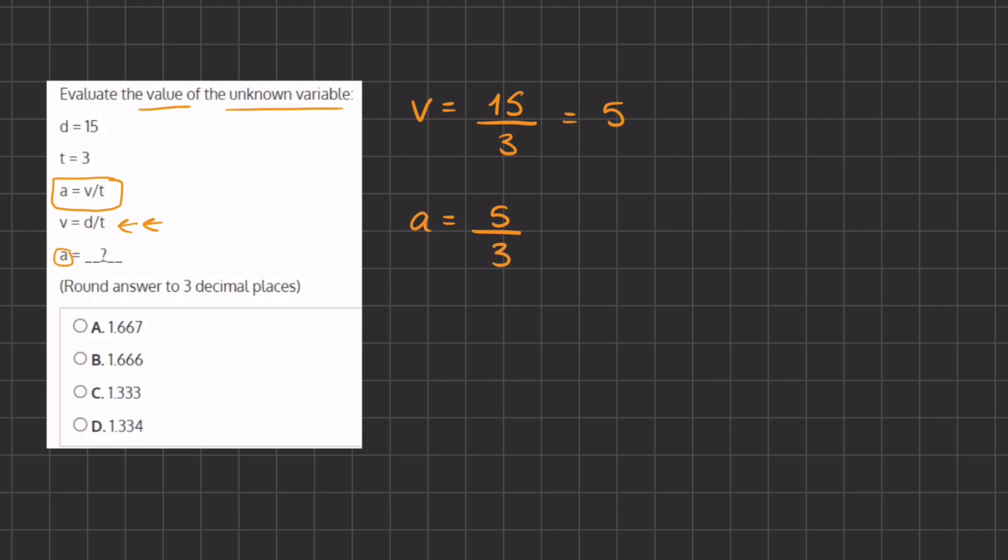All of our answers are written in decimal form, so we are going to ask ourselves how many times does 3 go into 5. That is once, and we have 2 left over out of 3. So we have a mixed number of 1 and 2 thirds.